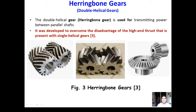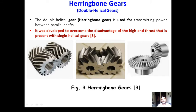A modification of the helical gear is the double helical gear, known as the herringbone gear, where the helix is cut on a double basis. The herringbone gear is used for transmitting power between two parallel shafts. It is complex in design but performs quietly in operation. It was developed to overcome the disadvantage of high axial thrust present in single helical gears. The limitation is that these gears are quite complex in their construction.